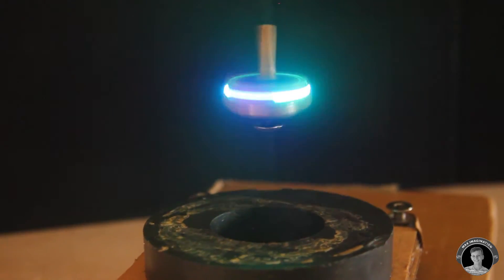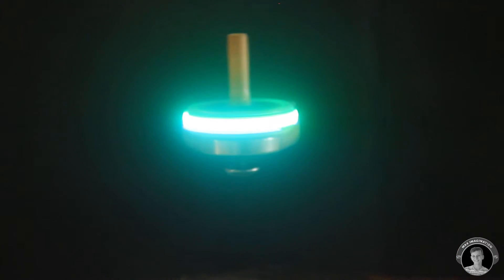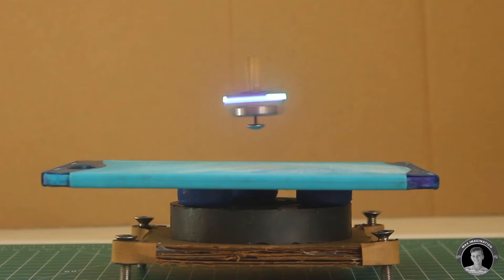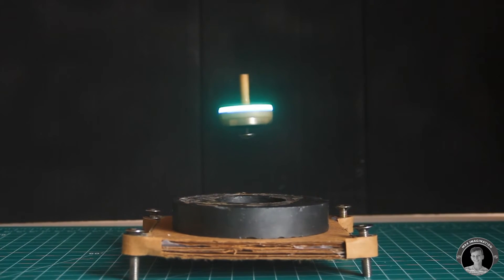There's two main aspects that allow the Levitron to levitate in a stable way. The first thing is the magnetic repulsion, which provides the force for levitation. The second thing is the gyroscopic effects due to the spinning of the top, which account for the stability of the levitation.